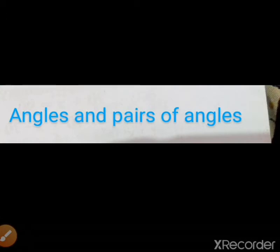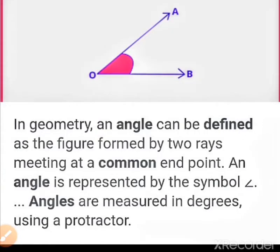Hello students, today we are going to learn Class 7 Lesson Number 4: Angles and Pairs of Angles. An angle can be defined as the figure formed by two rays meeting at a common endpoint. Angles are represented by a symbol, measured in degrees, and measured using a protractor.